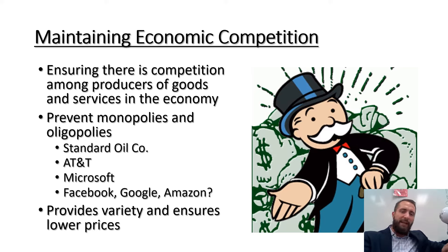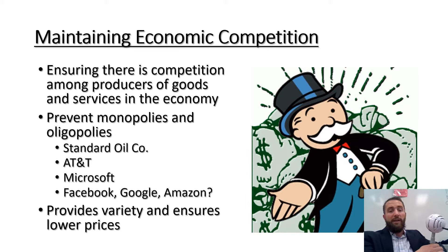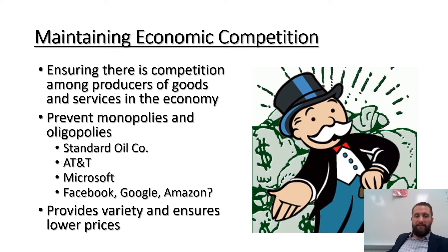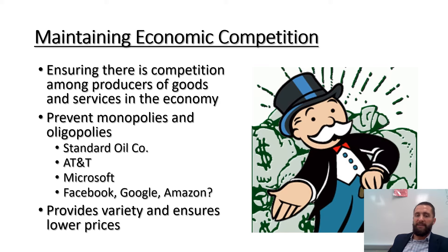The most famous examples include Standard Oil Company — Shell, Texaco, Exxon, and Mobil all used to be owned by the same company, and the government broke it up. They also broke up AT&T in the 1980s because it was the only telephone company in the United States. They later broke up Microsoft in terms of certain software applications. And even today, the government is currently looking at the power controlled by tech companies like Facebook, Google, and Amazon to see how much authority they have over the tech industry and whether they should be broken up.